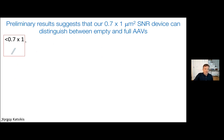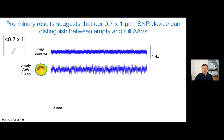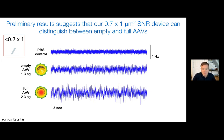Here are some very preliminary results from Yorgos's experiments using small 0.7 by 1 micron devices. When flowing buffer through, here's the noise signal on a 3-second timescale, plotted in hertz. When Yorgos measures viruses with empty capsids, you can already see by eye a clear difference in the noise properties. When he flows in viruses with full capsids, you can see an even greater difference from the empty ones. These results are preliminary — Yorgos is spending a lot of time thinking about robustness, repeatability, and quantification: what's the smallest fraction of empty capsids detectable within a virus population?